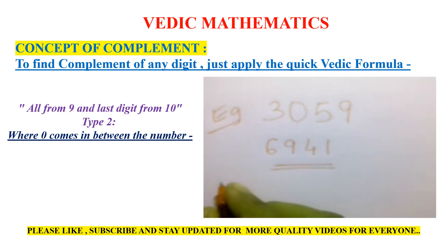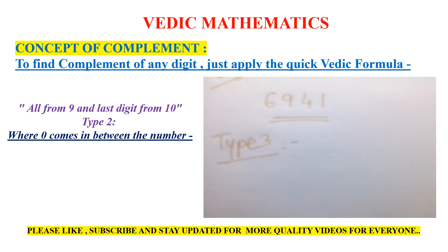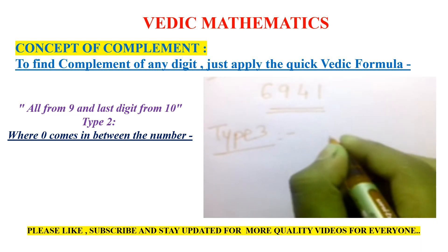Similarly, we will go to type 3 of complement. Type 3 is when 0 comes at the end of the number. In type 2, 0 was in the middle. In type 3, 0 comes at the end. Let's take an example.